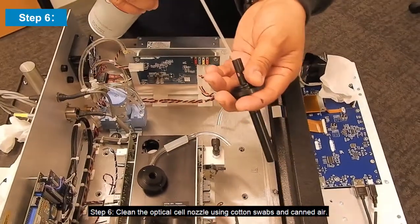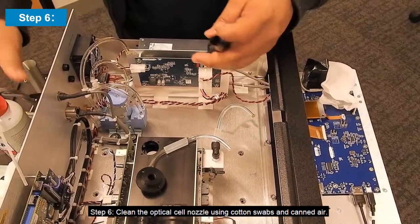Step 6: Clean the optical cell nozzle using cotton swabs and canned air.